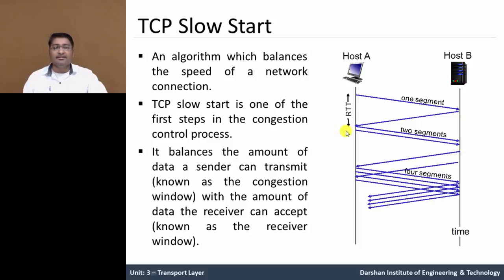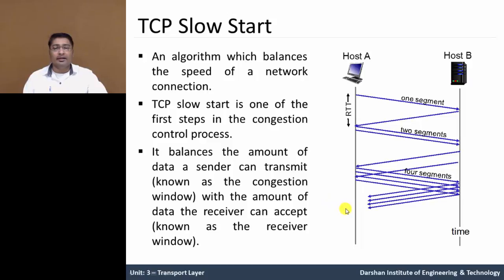Then it increases the size of the packet, so the sender can send two segments, and host B receives those segments and acknowledges correctly. After that, the sender knows there is still enough capacity at the receiving side. Then they can send more packets — the segment count increases to four segments. The receiver receives and acknowledges properly, until the receiving side reaches its capacity.